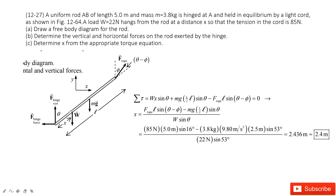Next, we need to determine the distance X — the distance from the hanging weight to point A, the rotation axis. We use the condition that net torque equals zero. The hinge force passes through the rotation axis, so it contributes no torque. For the weight W, the perpendicular distance from the rotation axis to this force is X·sin(θ). For gravity Mg, the perpendicular distance is (L/2)·sin(θ).